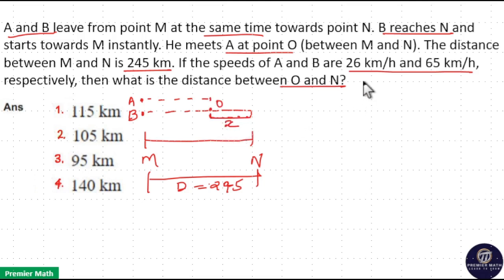Now in meeting point questions, time is constant. That is, here when A reaches point O at time T, B reaches point O while returning at the same time T. So when time is constant, distance is directly proportional to speed. So take the distance and speed ratio of A and B.